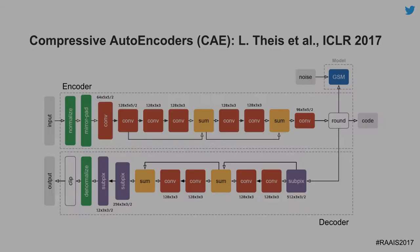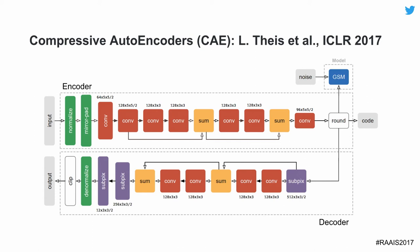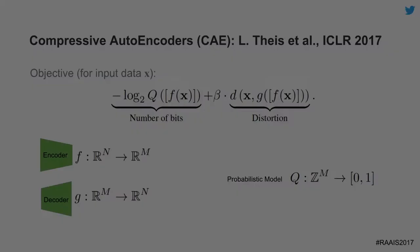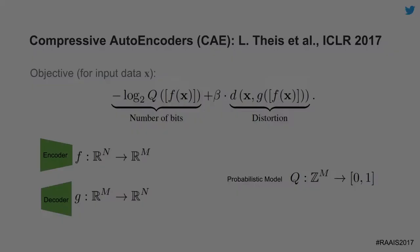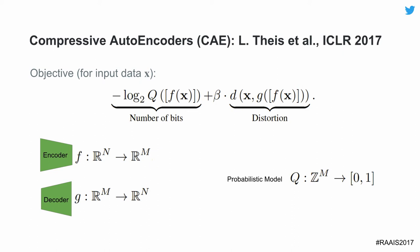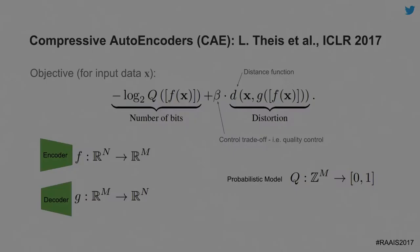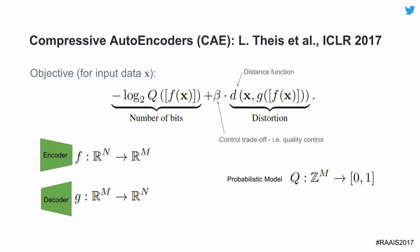One of our team members, Lucas, has come up with a network that can be split into an encoder and decoder and trained entirely end-to-end. To solve the quantization problem, he developed a way to model that lossy component — which you can't differentiate — using a probabilistic model that can be differentiated. At the same time, we can adjust the model to control the number of bits versus the amount of distortion we want to preserve.